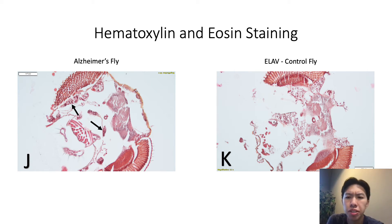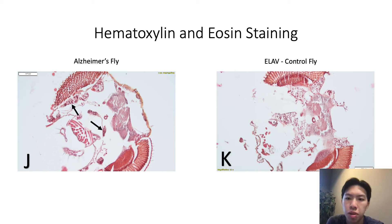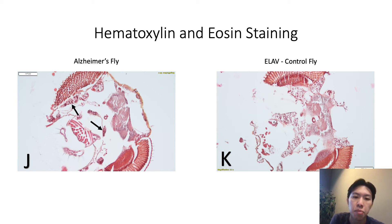From these slides, you can already see those protein aggregates in the Alzheimer's sample marked by the arrowheads, but they don't show up as dominantly in the ELOF group. However, it can't be said for certain what those are since H&E doesn't attach itself to any specific antigens within the sample.